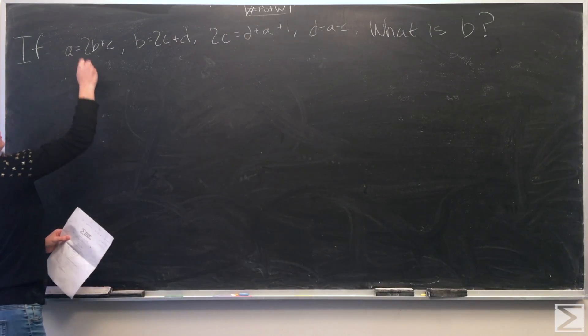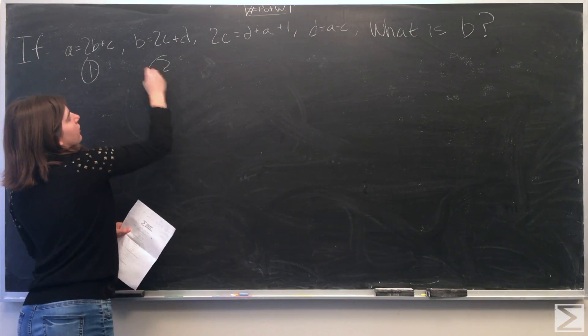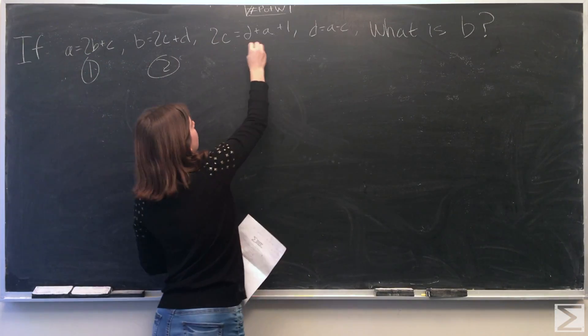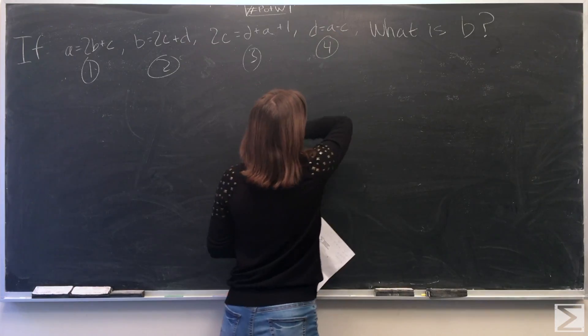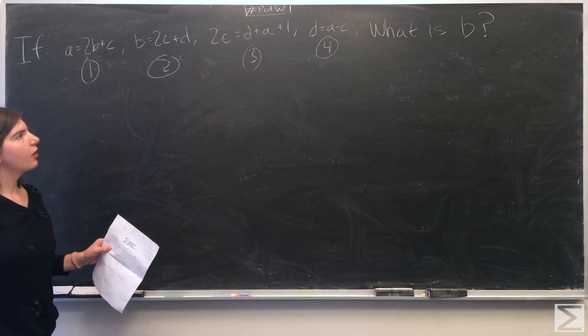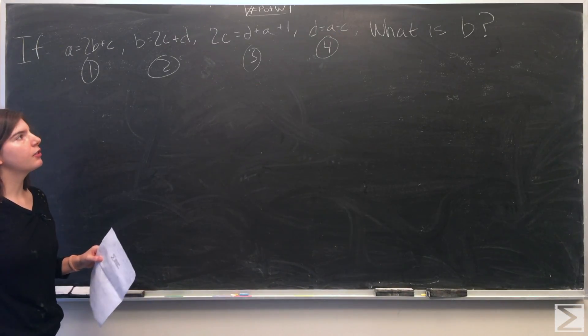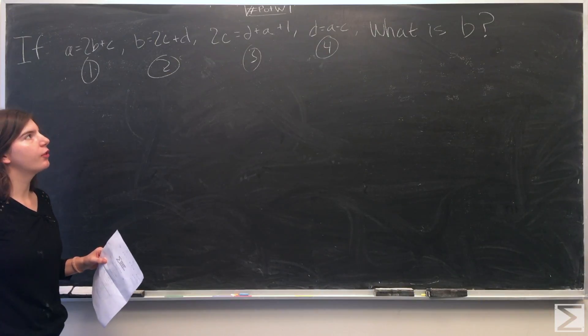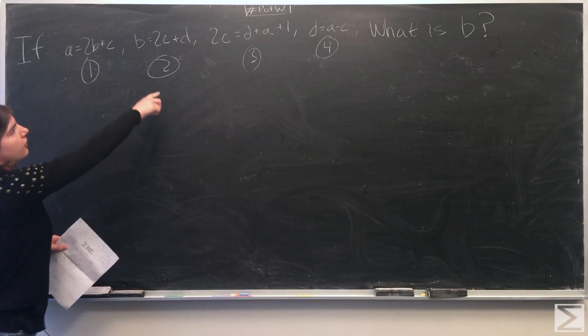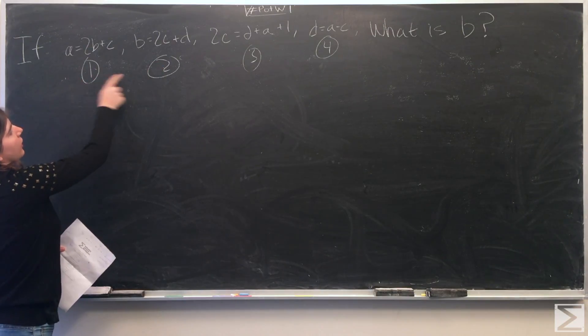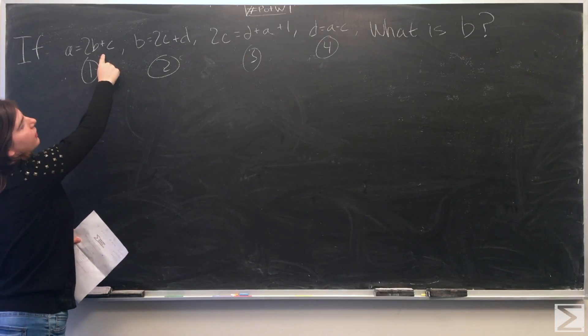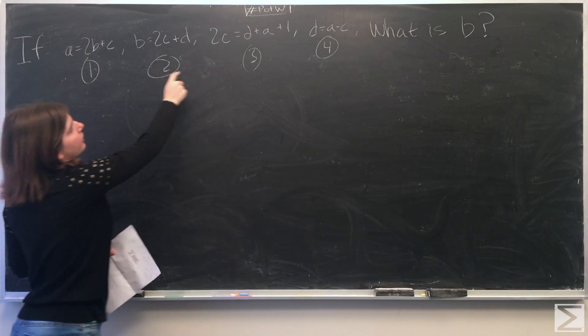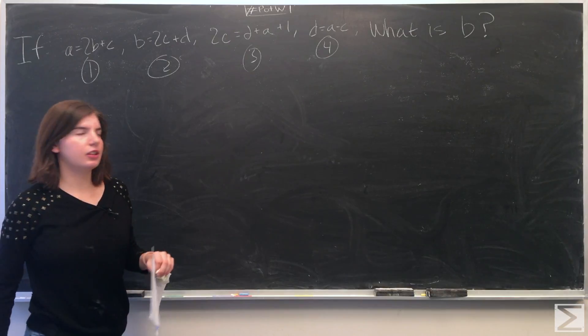To make things easier, we'll just number each equation. So we know that d equals a minus c from equation four. We'll take equations two and three, which both have d, and substitute it in.